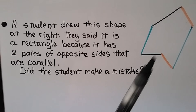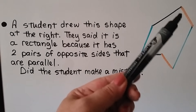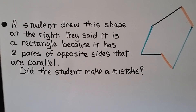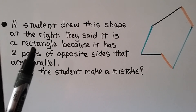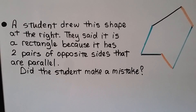Now take a look at this drawing. A student drew a shape and said it was a rectangle because it has two pairs of opposite sides that are parallel — this line is parallel to that one, and this line is parallel to this one. So it does have two pairs of opposite parallel sides, but is it a rectangle? If you said the student made a mistake, you're right. A rectangle has four sides, and this shape has one, two, three, four, five, six sides — that's not a rectangle, that's a hexagon.